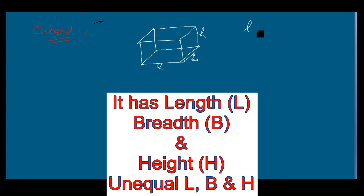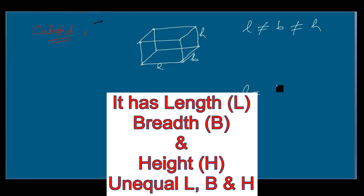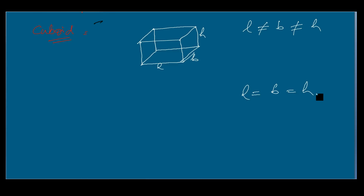A cuboid has a length, a breadth, and a height. In a cuboid, these dimensions are not equal — that means length is not equal to breadth, and breadth is not equal to height. If all dimensions become equal, then it becomes another shape which we call a cube.